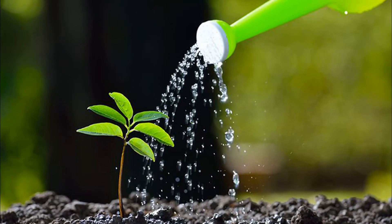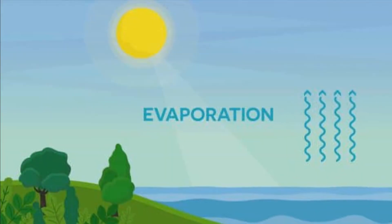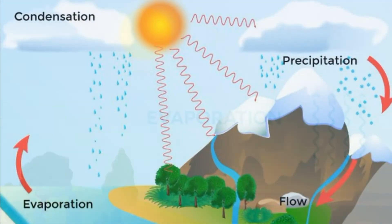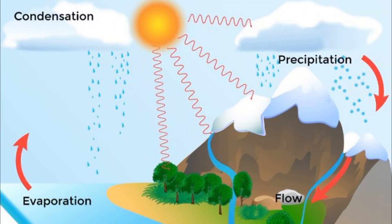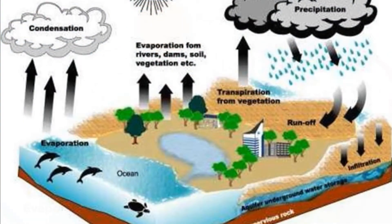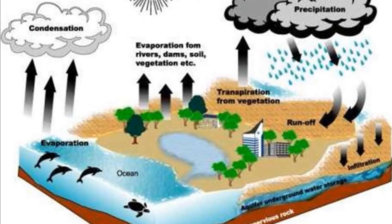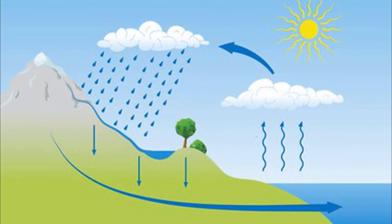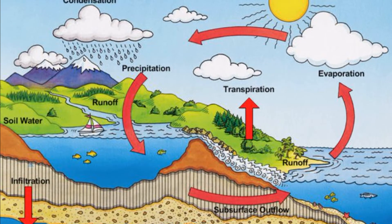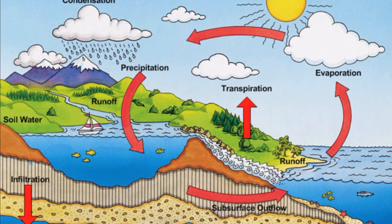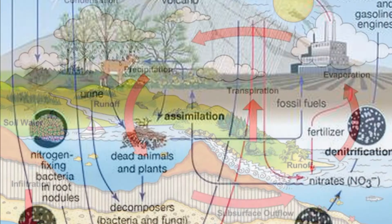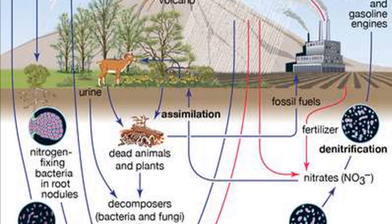Water from the soil, plants, and water surfaces evaporates due to the heat of the sun. The water vapor, on reaching the cool upper surfaces of the atmosphere, condenses and returns to the earth as rain and snow. This circulation of water from the earth's surface to the atmosphere and back to the earth is called the water cycle.